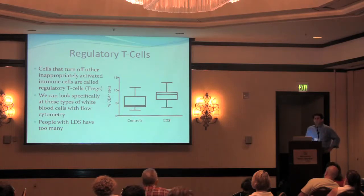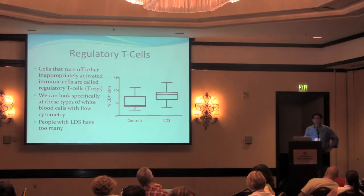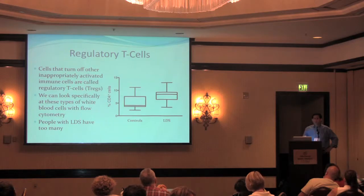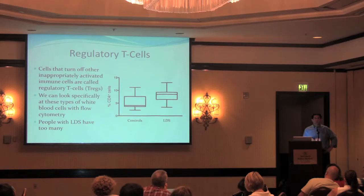So where are we going with this? We're now looking at whether there are too many Tregs because the regulatory T cells that people with Loeys-Dietz syndrome make don't work quite right, and so the body is responding by making more — essentially saying: it kind of worked, so if I just make enough of them, we'll be able to turn off these inappropriate immune responses. What we're doing now is looking at these regulatory T cells to see if they are able to do the job they're supposed to do.